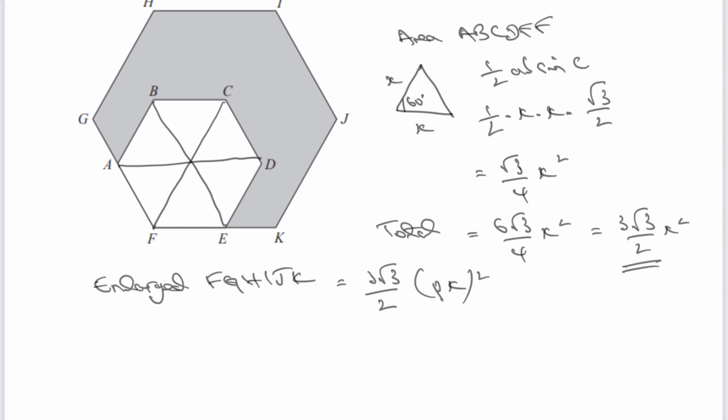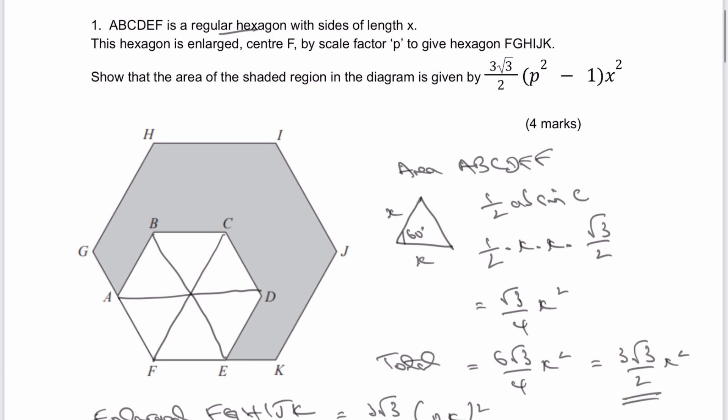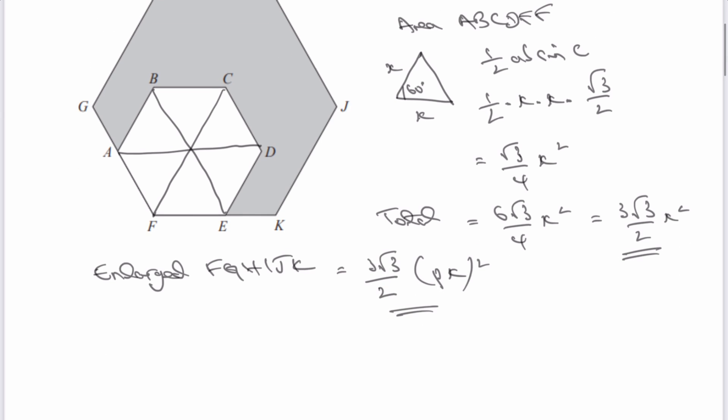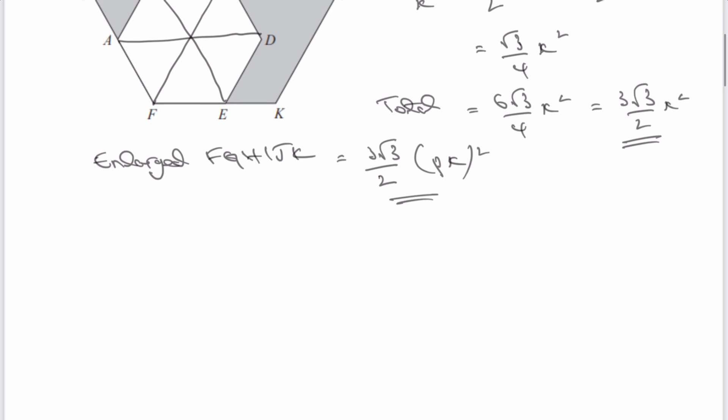Hopefully that's OK for you, that really when we go back to the question, what we're looking at is the larger triangle is enlarged by scale factor P to give the larger hexagon. So we've got our two components now, and then really it's just a case of saying the shaded region is going to be the difference between the enlarged hexagon and the smaller hexagon.